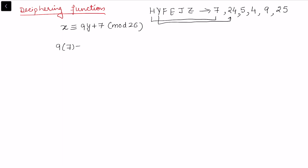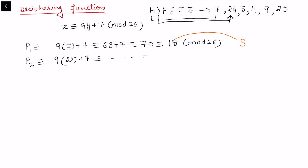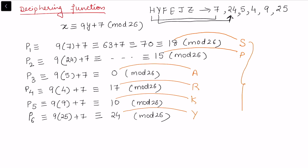For the first letter, y=7: 9×7 + 7 = 63 + 7 = 70 ≡ 18 mod 26, which corresponds to S. For the second, y=24: 9×24 + 7 = 216 + 7, reduced mod 26 gives 15, which corresponds to P. Continuing this process for the remaining letters, we recover the full plain text 'sparky', confirming the decryption is correct.